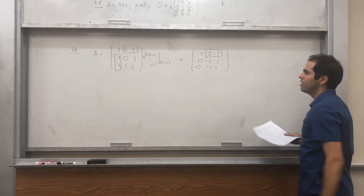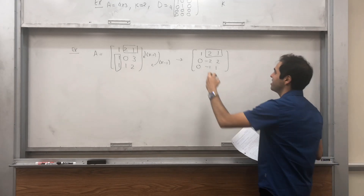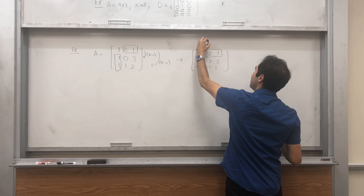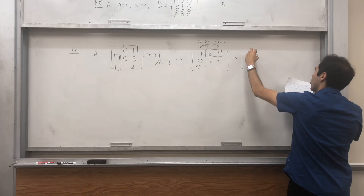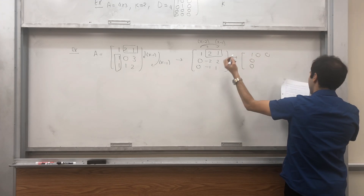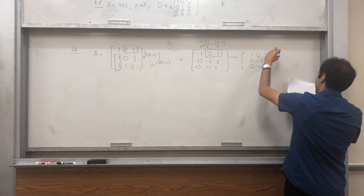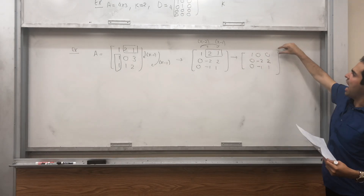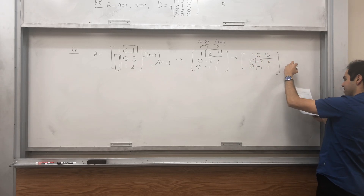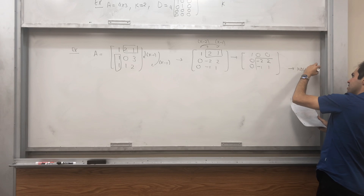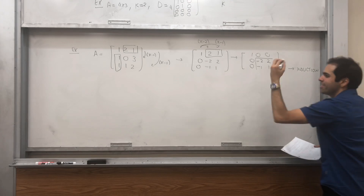Now we want the first row's other entries to be zero. With row reductions alone that's impossible, but with column reductions we can do this. Multiply the second column by minus two and the third column by minus one, and we get [1, 0, 0; 0, -2, 2; 0, -1, 1]. The outside looks like what we want, and then for the rest we basically use induction. The argument shows it works for the remaining submatrix as well — but since this is just an example, let's continue.